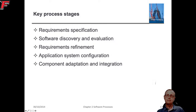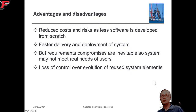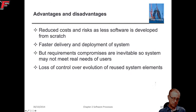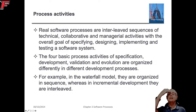The key processes for reuse are: requirement specification, software discovery, requirements refinement, application system configuration, and component adaptation and integration. Benefits include reduced costs and potentially faster delivery. Downsides include having to compromise on requirements and not having control over the reused system elements.